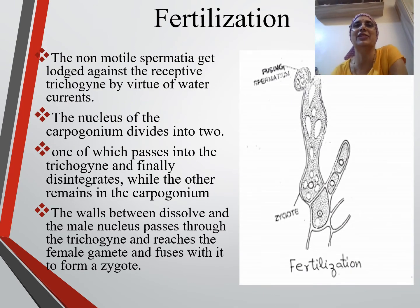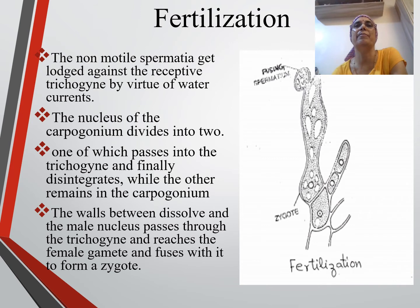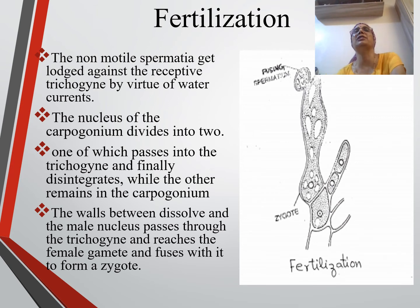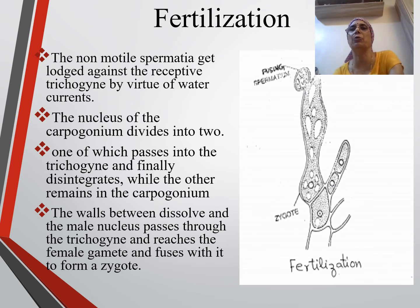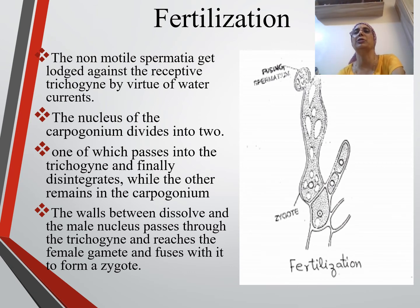Now let us study fertilization. The male gametes, the spermatia, are produced in bulk. They are non-motile and are drifted by water currents to reach the trichogyne — the receptive spot of the carpogonium. The nucleus of the carpogonium divides into two: one passes into the trichogyne and finally disintegrates, while the other remains in the carpogonium. The walls between them dissolve, and the male nucleus passes through the trichogyne, reaches the female gamete, and fuses with it to form a diploid zygote.